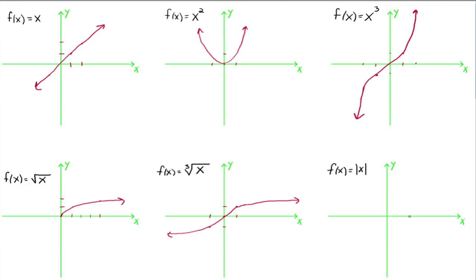The last one is the absolute value function. When x is 0, the absolute value of 0 is 0. When x is 1, the absolute value is 1. When x is negative 1, it's also 1. When x is 2, it's 2; when x is negative 2, it's also 2. It's similar to the parabola, but it's not curved — the parabola curves near the origin, whereas the absolute value function comes to a sharp point at the origin and forms two straight lines. The squaring function has a smooth curve near the origin.